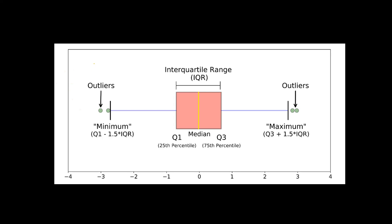I'm sure you must have seen this diagram if you're taking a statistics course — this is nothing but what we call a box whisker plot. You can see the box and these are the whiskers, hence the name box whisker plot. This is what the interquartile range looks like. The interquartile range will eat up 50% of your data, so 50% of your data is going to lie within the interquartile range. Interquartile range is nothing but Q3 minus Q1.